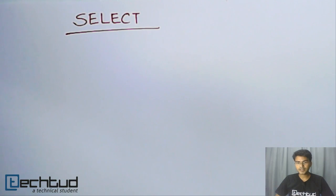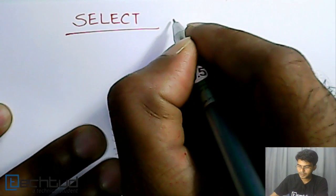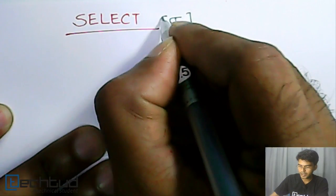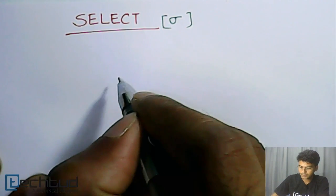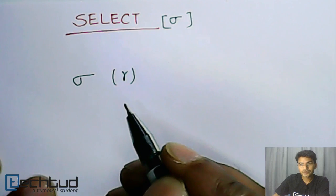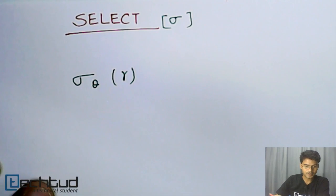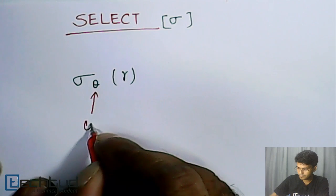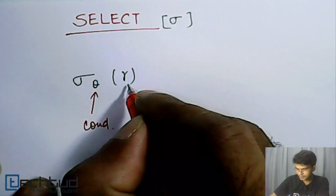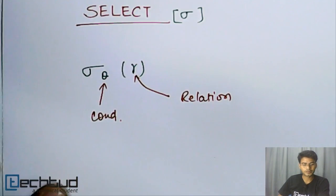Welcome back. We are studying the select operation in this video. The select operation is basically selecting a particular tuple or row from a relation which satisfies a particular condition. We write this as Sigma, and represent the expression as: from relation R, select rows which satisfy condition theta. Here, theta is the condition, R is the relation, and Sigma is the select operator.